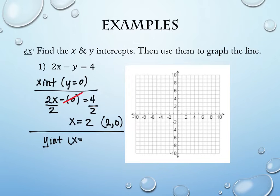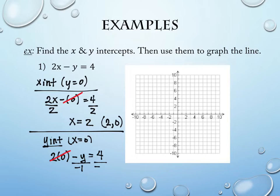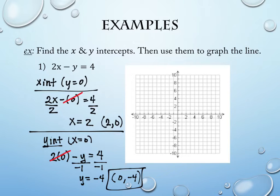The y-intercept is when x equals 0. So it's 2 times 0 minus y equals 4, which gives negative y equals 4. Dividing by negative 1, y equals negative 4. The y-intercept is the point (0, negative 4). I now have two points — (2, 0) and (0, negative 4) — and I can connect them with a line to graph the equation.